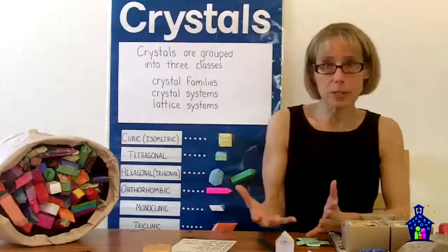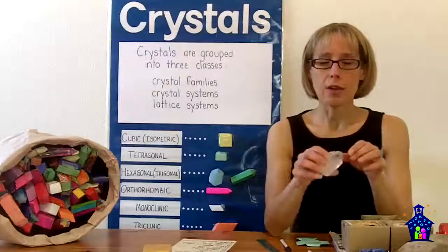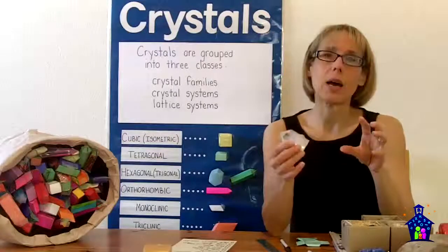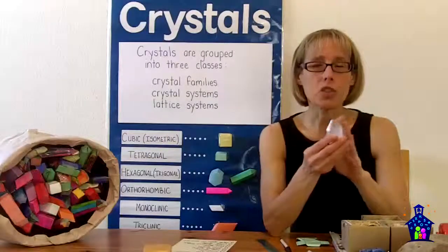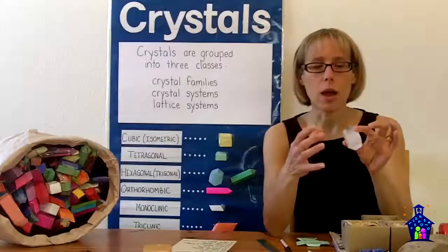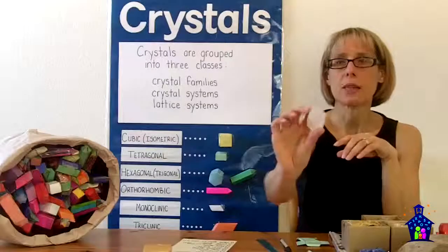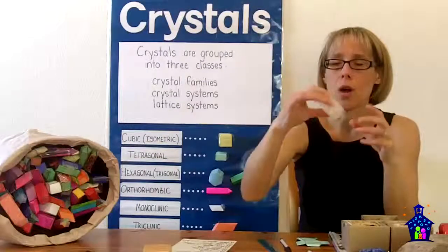So crystals are minerals and these particular minerals have their atoms organized in a very orderly and distinctive way. In fact, the shape of the crystal mirrors the internal organization of the atoms. So you can see here that is a beautiful hexagon and that mirrors how the atoms are organized.